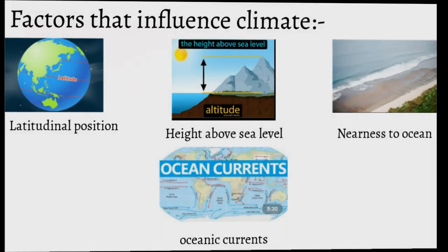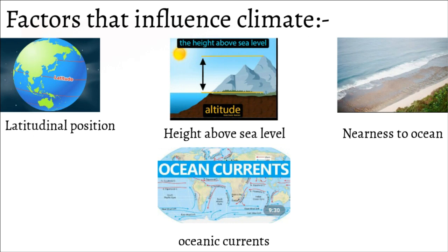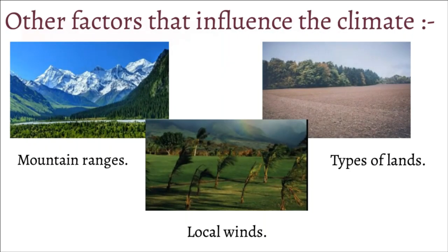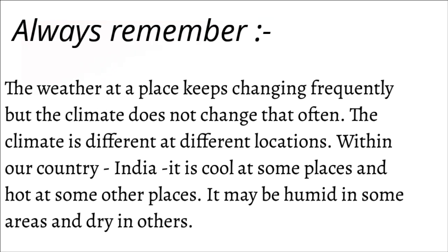Latitudinal position, height above sea level, nearness to the ocean, oceanic currents, and oceanic water are factors that influence climate. Besides these, mountain ranges, types of land, and local winds are other factors that influence the climate of a region.